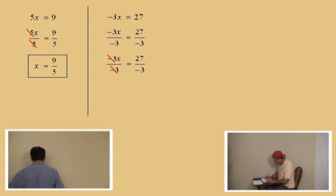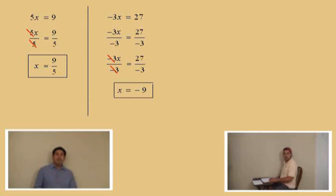So anyway, the right-hand side is 27 over negative 3. And finally, we get our answer, x equals negative 9. Don't forget to box your answer there. And so, moving on here.